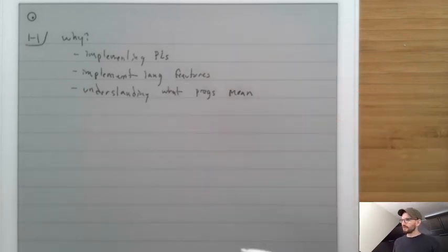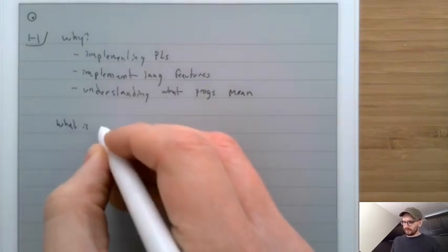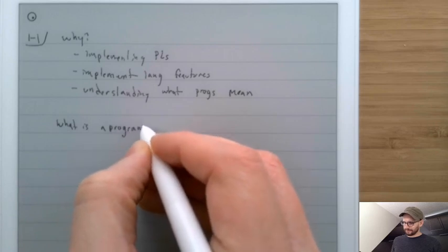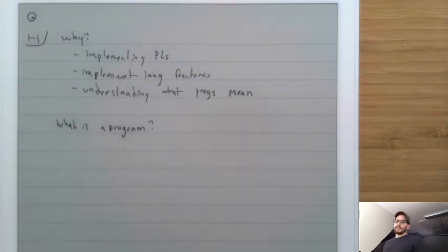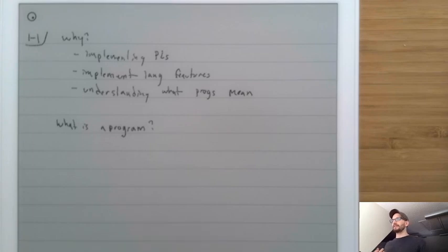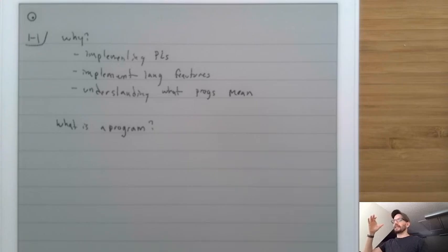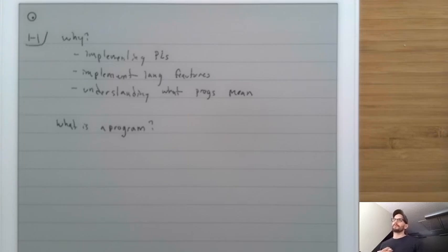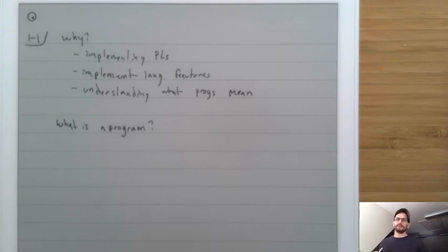To get started, let's talk about what exactly a program is. If you're familiar with foundations of computer science, you may recall that we often see programs, computers, and algorithms as different names for the same underlying idea of a computation — a procedure for solving some problem. Although that is a very fruitful way to think about computation theoretically, let's be a little bit more mundane in this class.